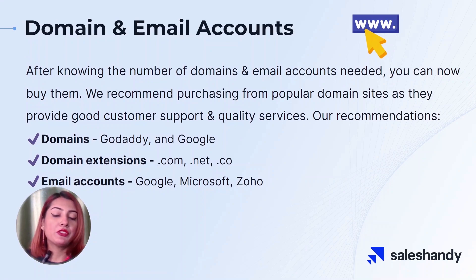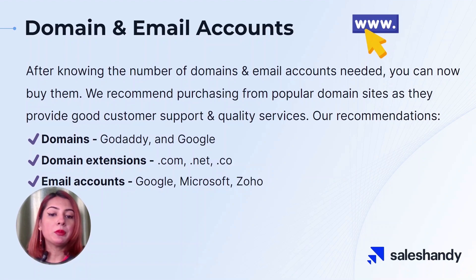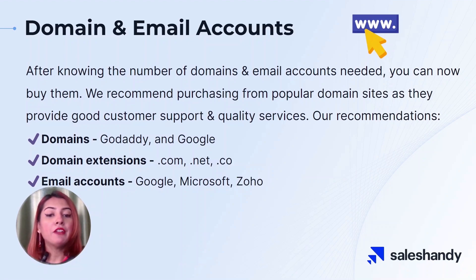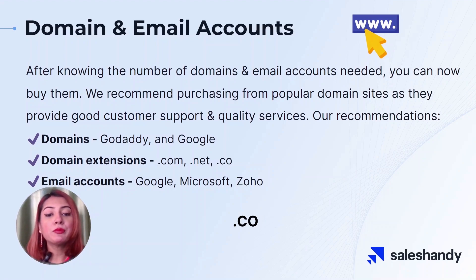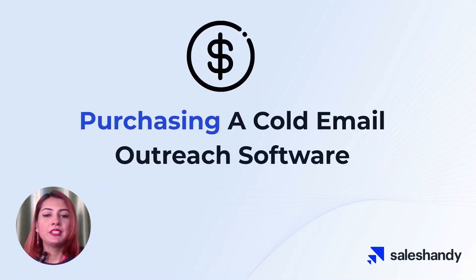Here are a few suggestions for domains and email accounts. For purchasing a domain, we recommend using GoDaddy or Google. For domain extensions, we recommend .com, .net, and .co. And for the most popular ESPs, we recommend Google, Microsoft, and Zoho. Now let's move on to the second part of this lesson: purchasing a cold email outreach software.